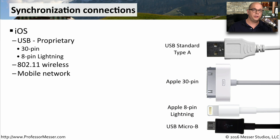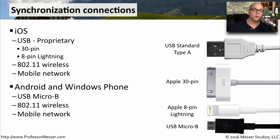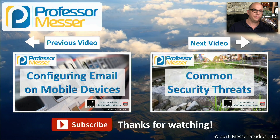To connect your phone to your local computer, you need a cable that supports your mobile device. If you're running iOS, it will be USB on one side with a proprietary connector on the other — an Apple 30-pin connector on older iOS devices, and the Apple 8-pin Lightning connector on newer iOS devices. iOS can also synchronize over your 802.11 wireless network and over the mobile provider's network. On an Android or Windows Phone device, you'll connect with a USB micro-B connection, and you can also use your local 802.11 wireless network or your mobile provider's network for synchronization.